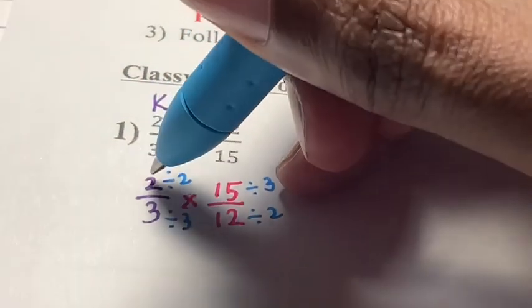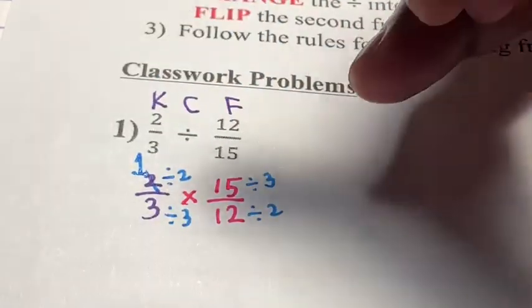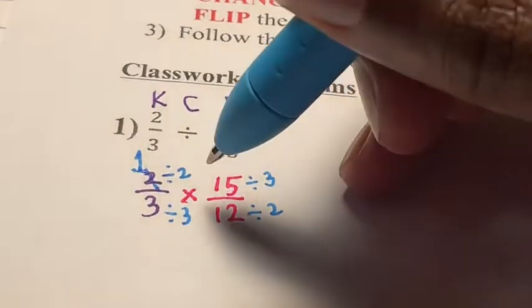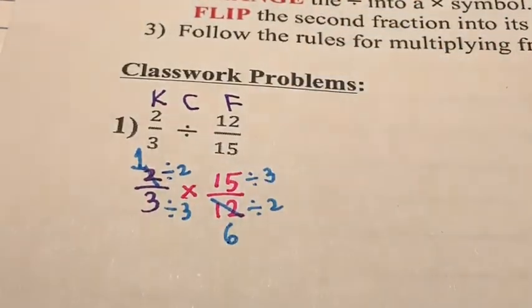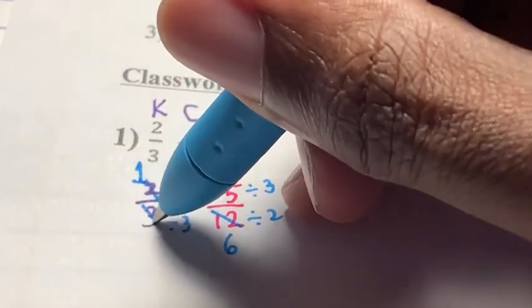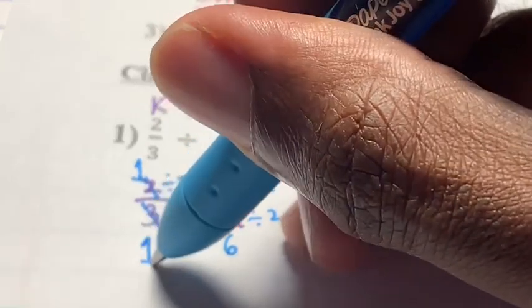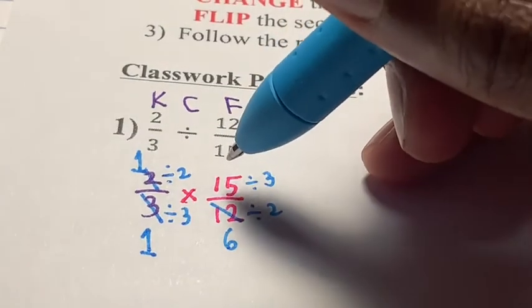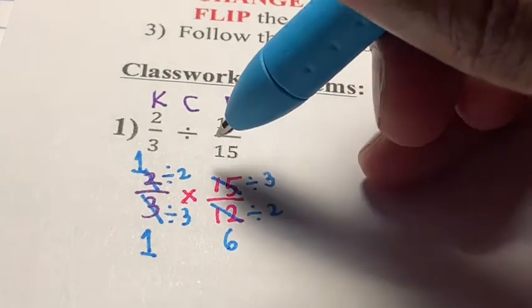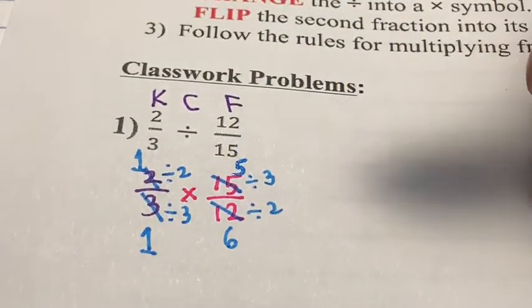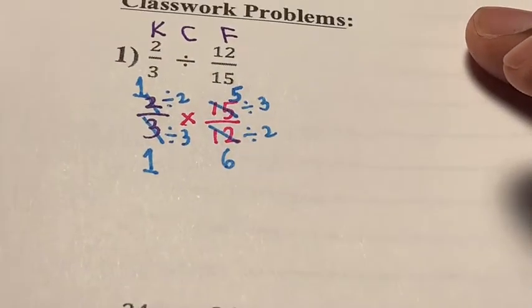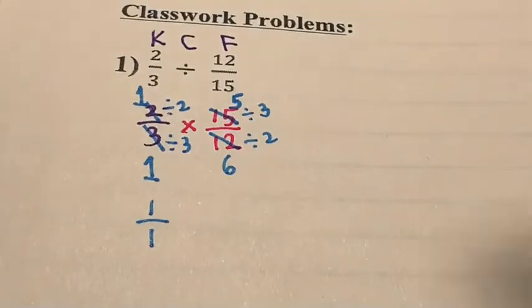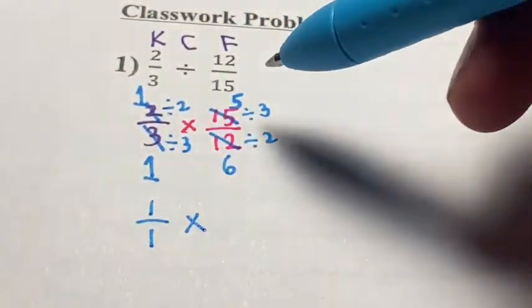2 divided by 2 is 1 — cancel the 2 and put a 1. And 12 divided by 2 is 6 — cancel the 12 and put a 6. Look at 3 and 15: 3 divided by 3 is 1, and 15 divided by 3 is 5. Now let's rewrite our new fractions: we have 1 over 1, times 5 over 6.